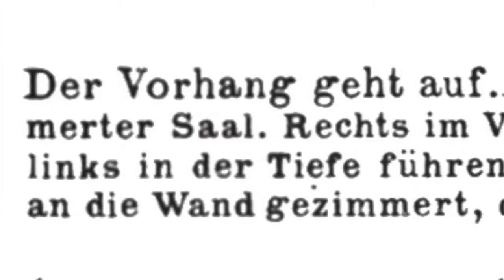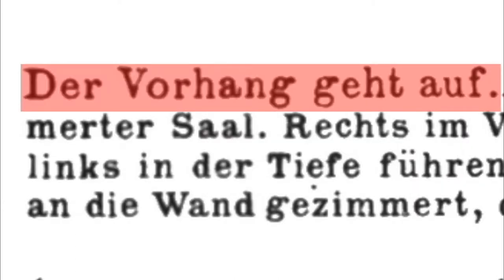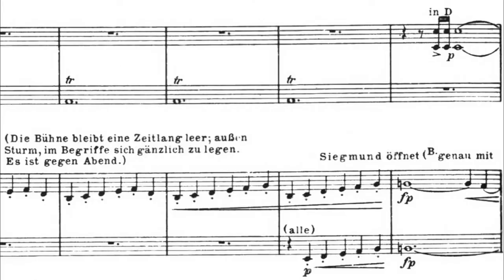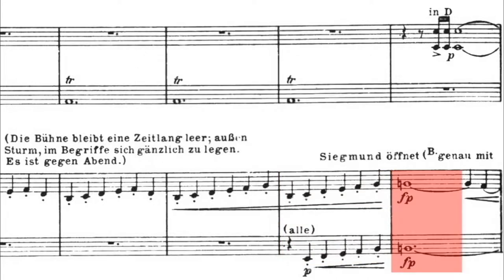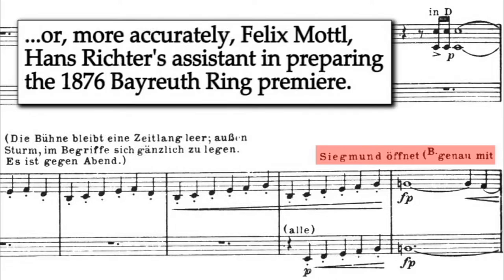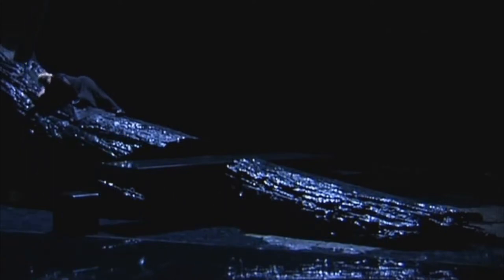It's at this point Wagner asks the curtain to open on Hunding's dwelling. Cellos telescope the prelude's initial bundle into a duo of rising six-note scales, the second reinforced by all contrabases to climax fortepiano on a single octavo dotted minim. The Meister specifically requests Siegmund to enter at this precise moment, which all the productions available on home video to this author ignore, lacking only Kupfer, who, for his 2003 Lisieux production, honors it to the letter.